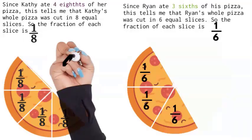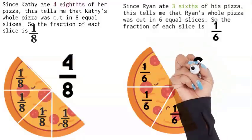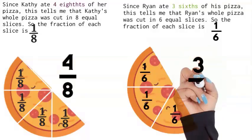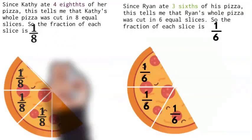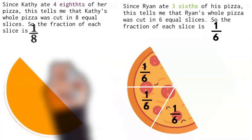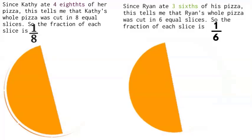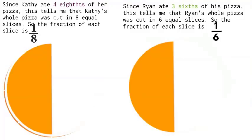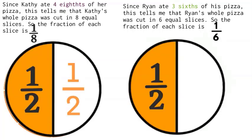And he ate three of those one sixths. So four eighths versus three sixths eaten. Let's go ahead and remove the actual pizza, and I want to turn your attention to the fact that both of these look very much the same. Would you agree?